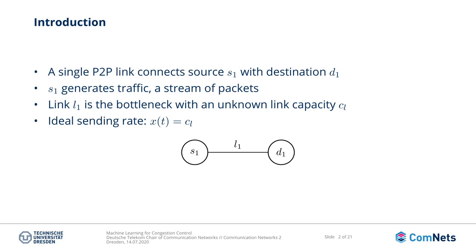The applications that generate the traffic may generate data so fast that the link is too slow to handle it. In this case we say we already have congestion, because the link cannot process the amount of data in time. Ideally, you would want the source node to generate traffic with a sending rate that is exactly equivalent to the link capacity. But let's have a look at what happens if the applications actually are too fast.